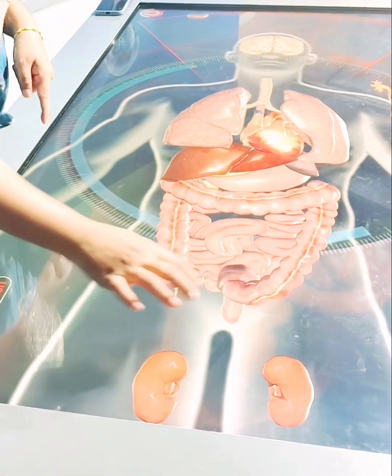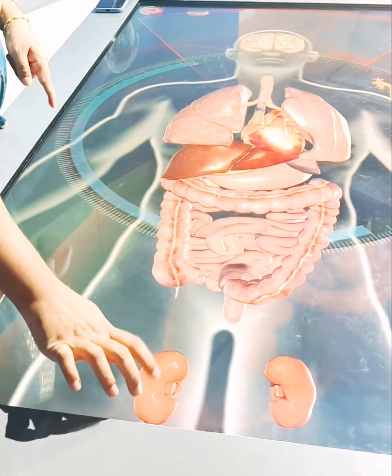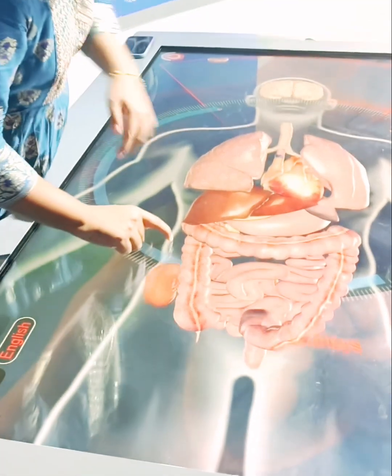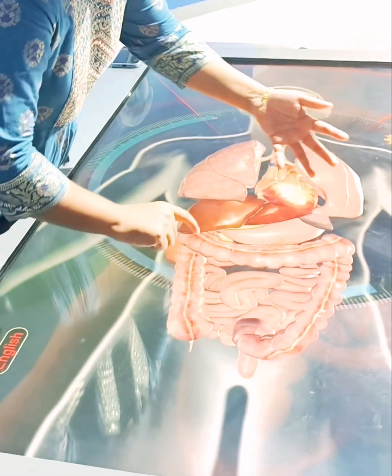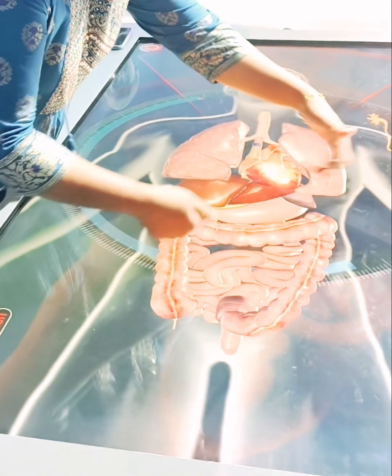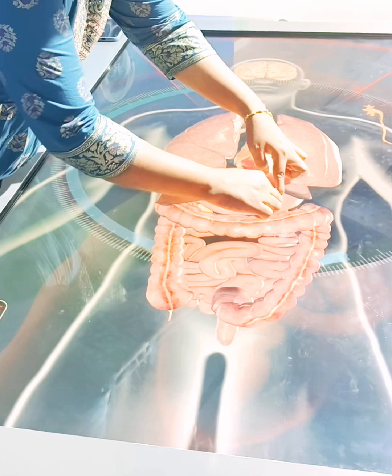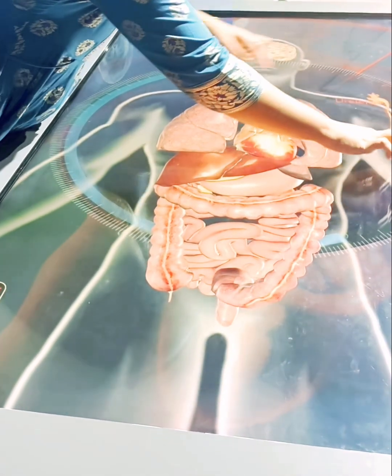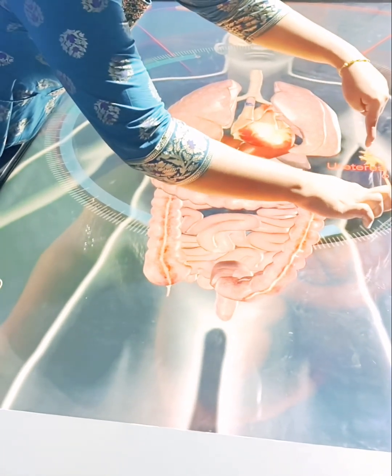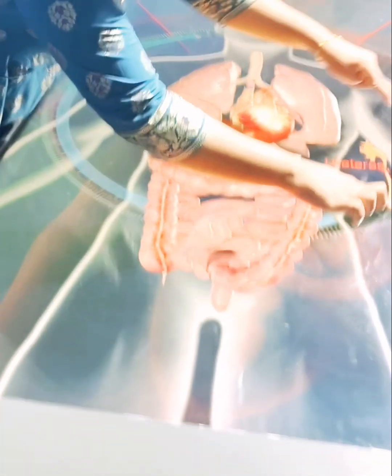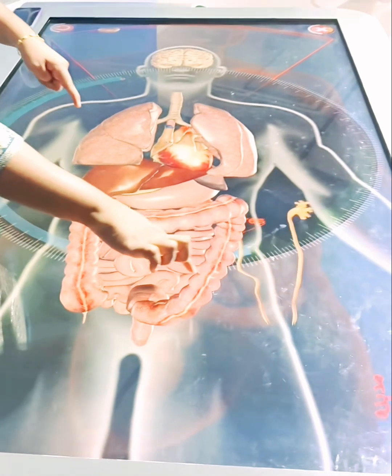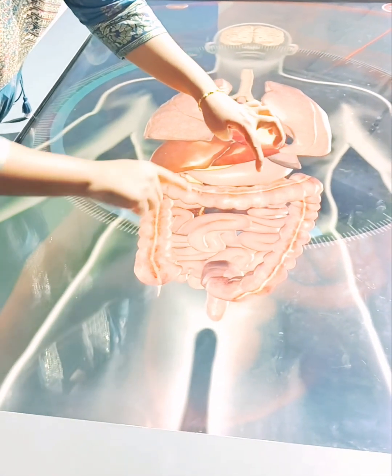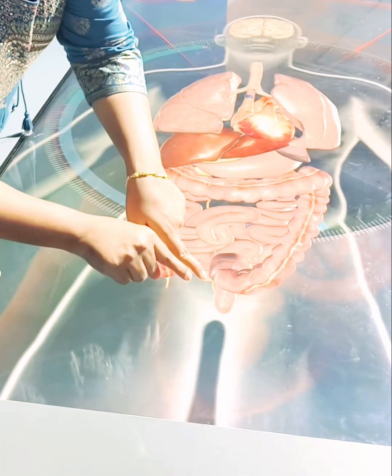Then we have the kidneys. These are two bean-shaped organs about the size of your fist and it is located just below the rib cage on each side of the spine. Here the major organs are hiding the kidneys actually. Kidneys filter the blood and remove waste and extra water and form urine.